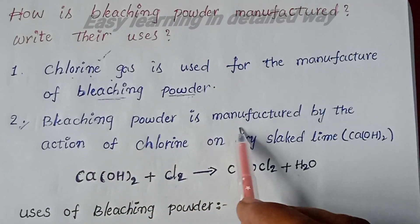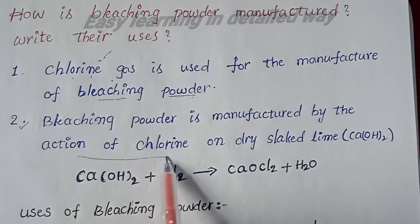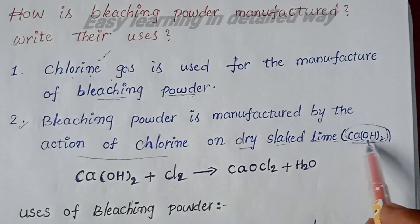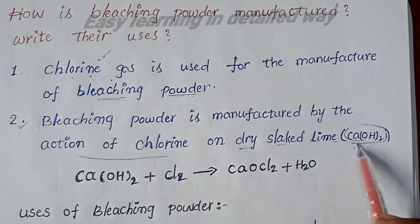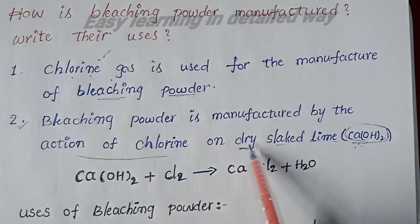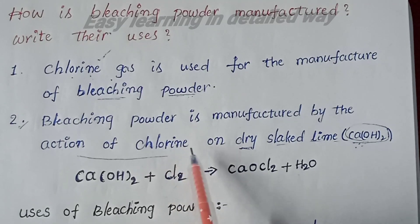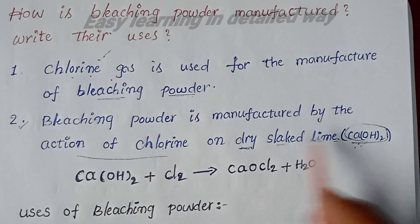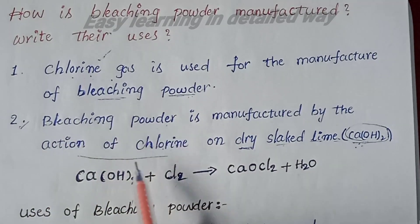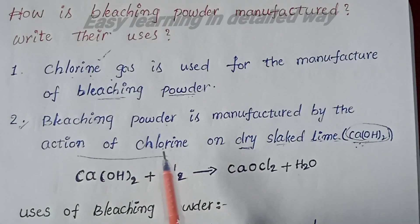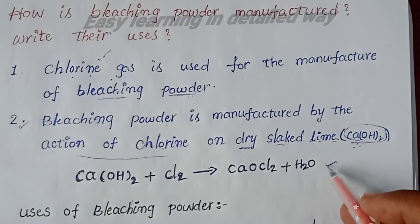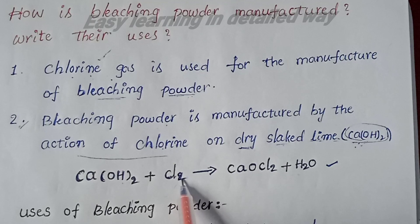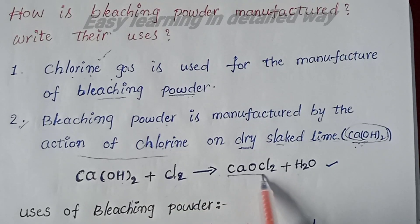Bleaching powder is manufactured by the action of chlorine on dry slaked lime, that is calcium hydroxide. When chlorine acts on dry slaked lime, we get bleaching powder. The chemical equation is: Ca(OH)₂ plus Cl₂ gives us bleaching powder.